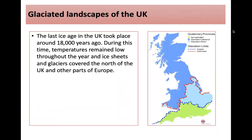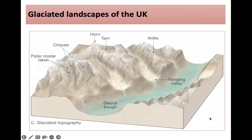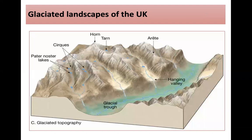We also looked at glaciated landscapes of the UK. The last ice age took place about 18,000 years ago. We're currently in the Holocene, and the Quaternary spans 2.6 million years. During this time, temperatures remained low throughout the year, and ice sheets and glaciers covered the north of the UK and other parts of Europe. Our glaciated landscapes have particular physical landforms: a U-shaped valley, a hanging valley, an arête, pyramidal peaks, tarns, horns, corries and lakes.